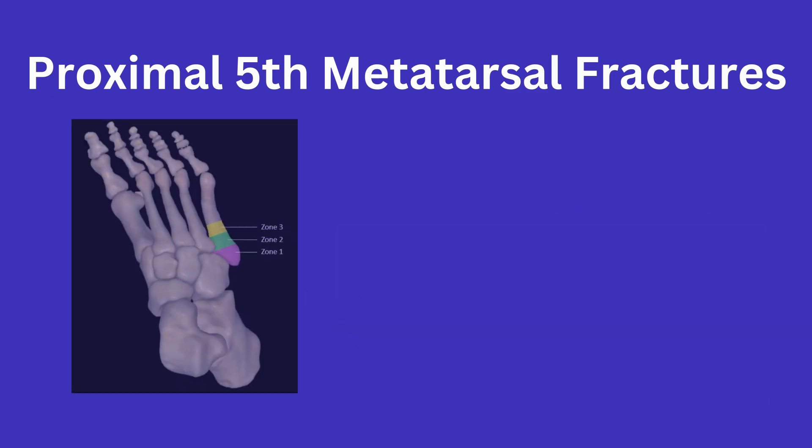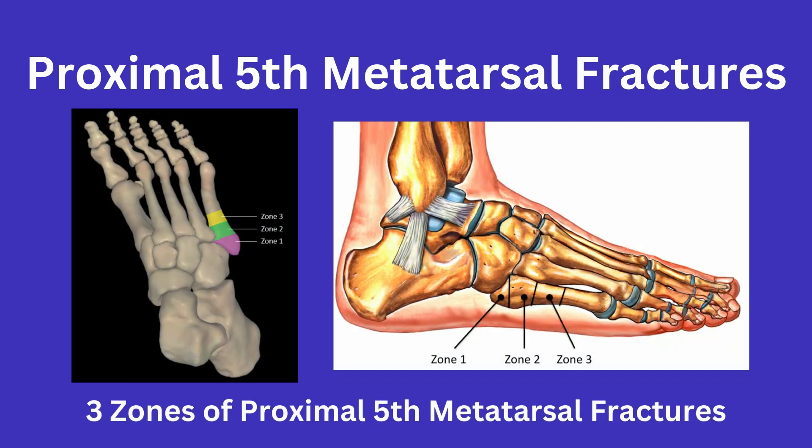Based on this, the base of the 5th metatarsal is split into three zones. Zone 1 includes the tuberosity. Zone 2 includes the metaphyseal-diaphyseal junction, which contains the watershed zone and is where the 5th metatarsal articulates with the 4th. Zone 3 is the diaphyseal area, which extends approximately 1.5 centimeters distally from the tuberosity into the tubular part of the diaphysis.